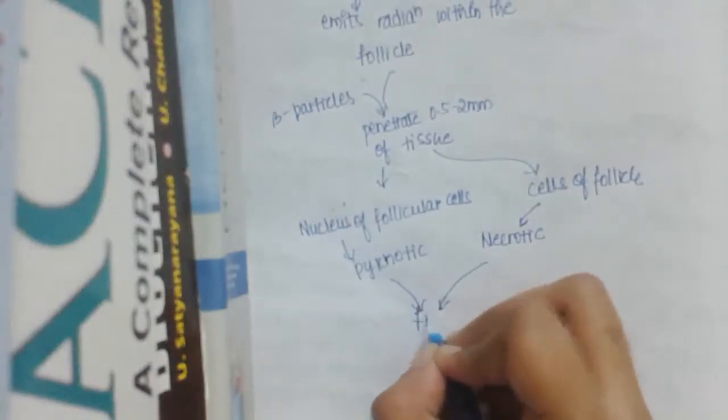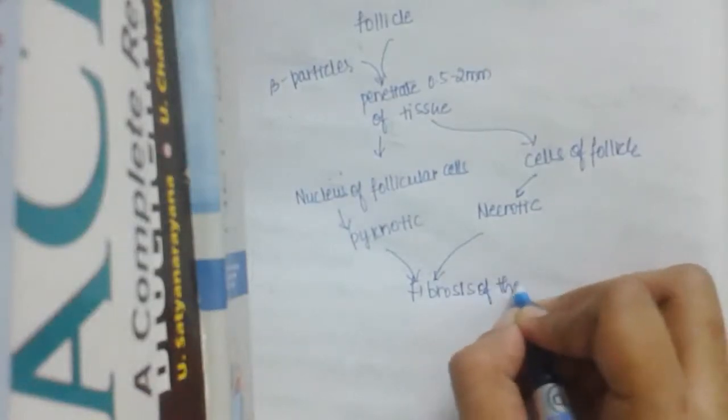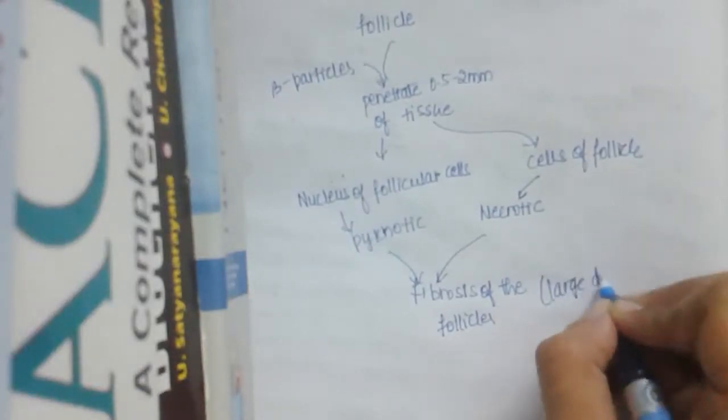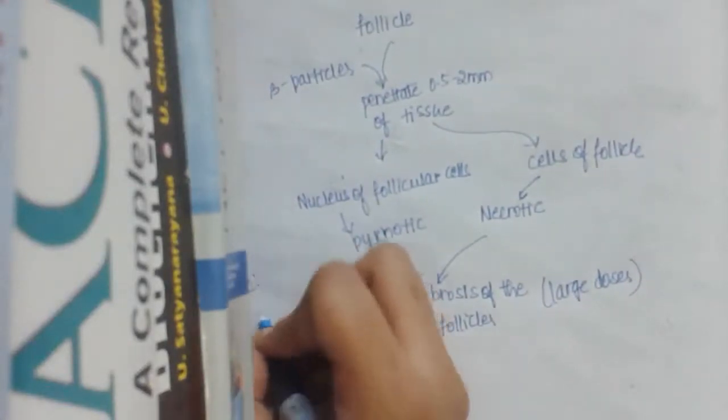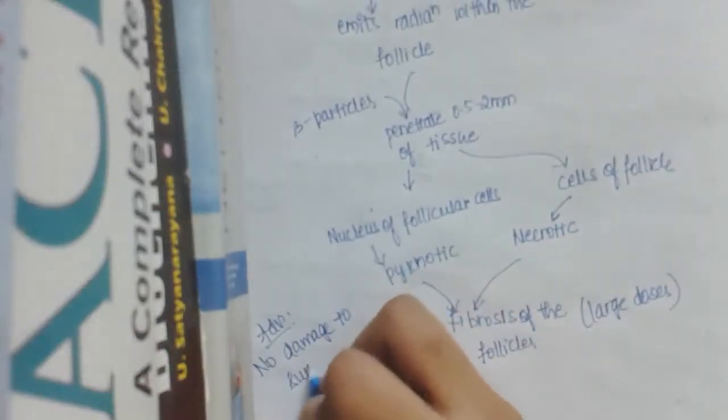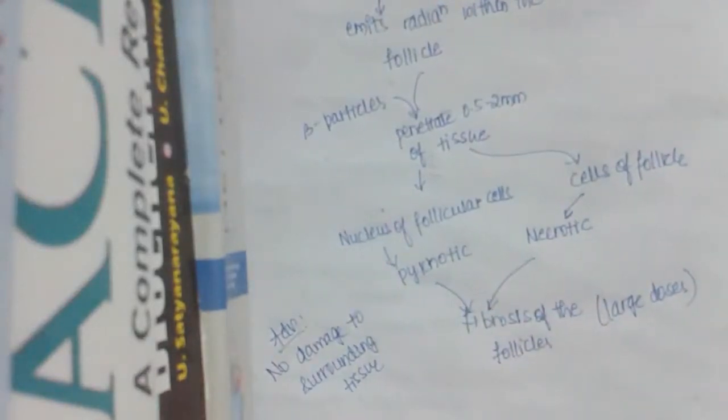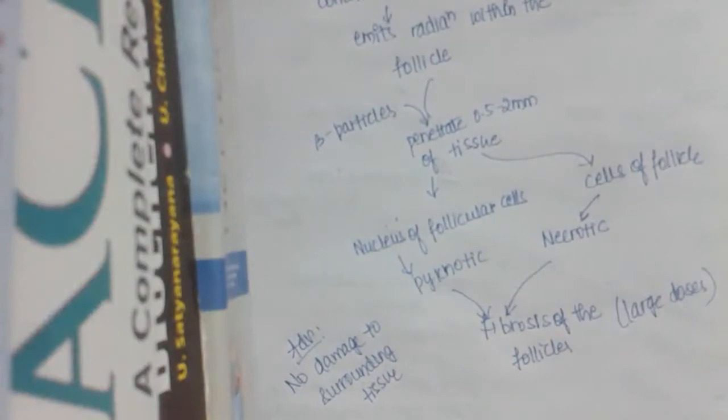And then there is fibrosis of the follicles. This occurs mostly in large doses, but the advantage is no damage to surrounding tissues. This is the mechanism of action of radioactive iodine.